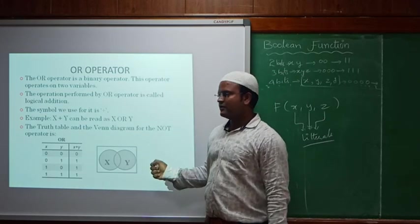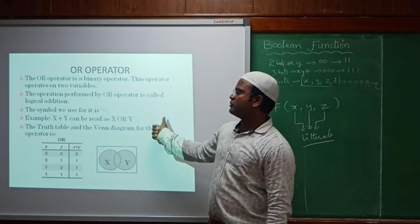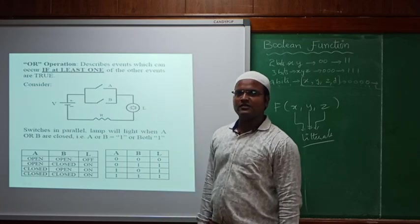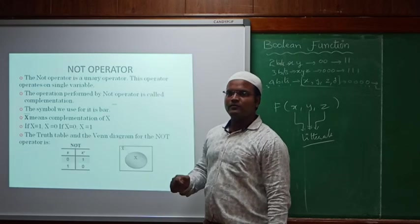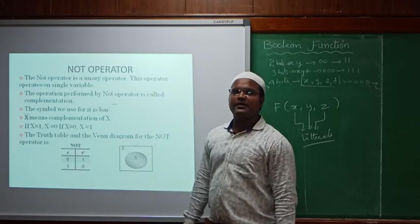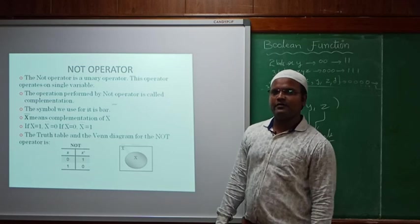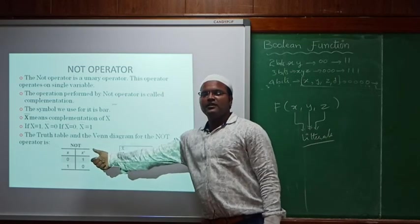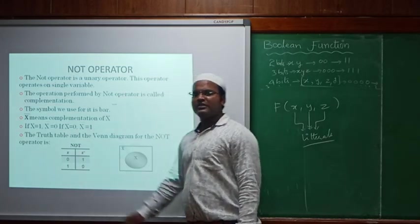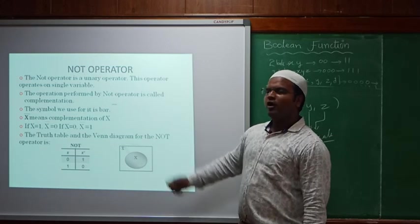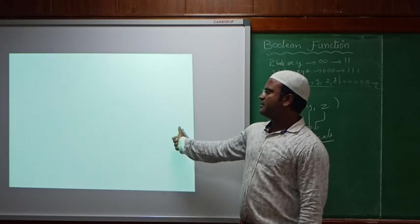The OR operator works like union — combining all things together. If any one input is high, the output is high. For the switch analogy: we take two switches in parallel. If both switches are off, the bulb can't glow. If any one switch is high, the bulb glows. This resembles the OR gate.